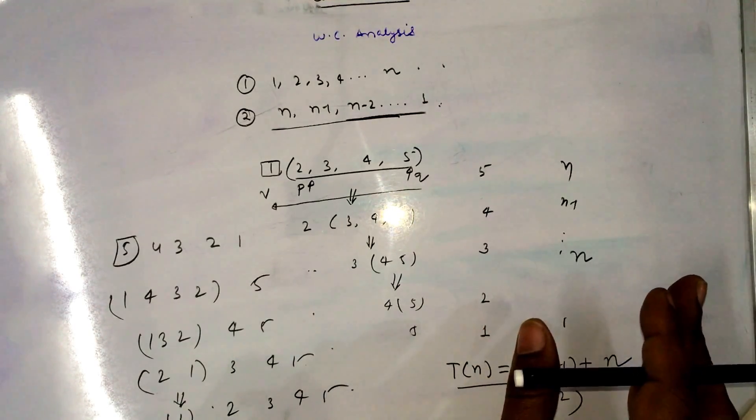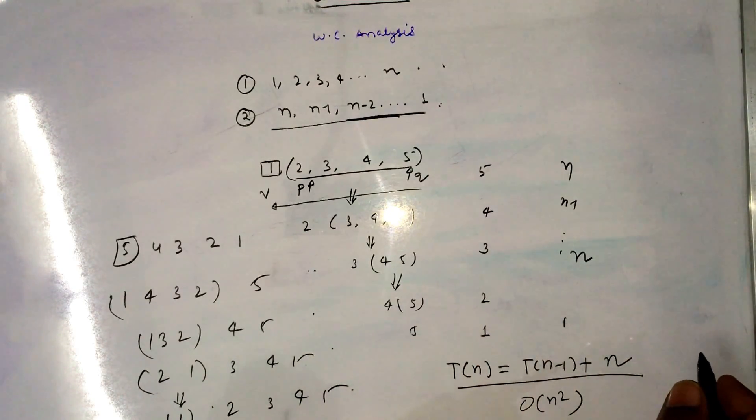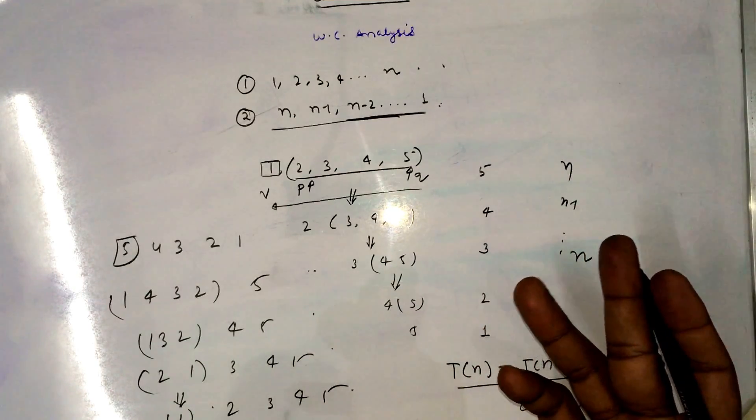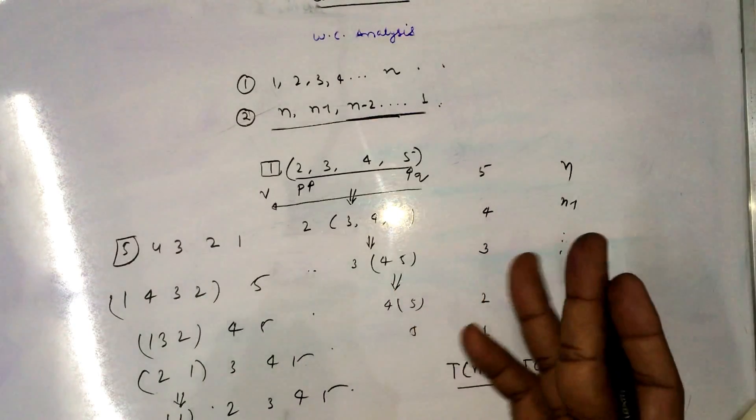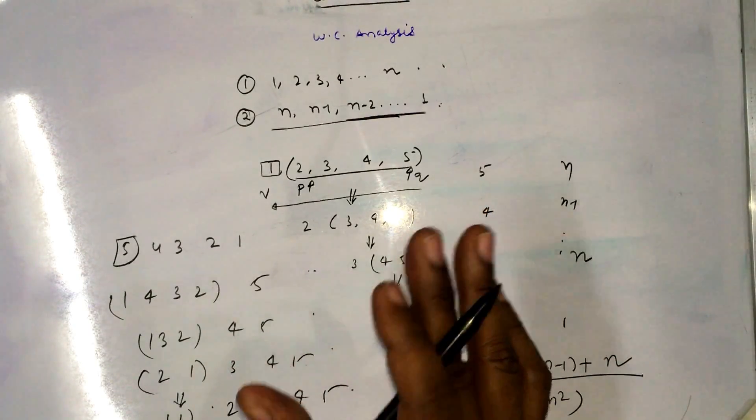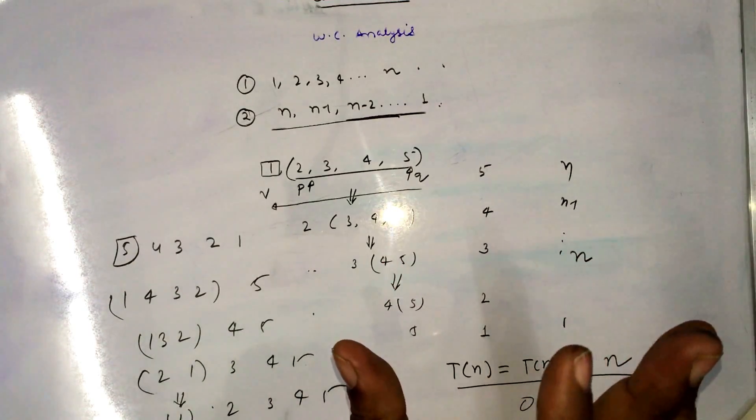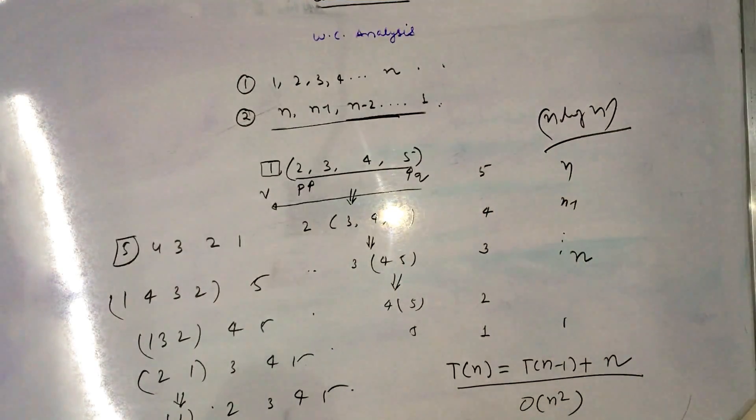In worst case, when the input given to the quicksort is sorted either in ascending or descending order, it will require order of n square time. And if the input is not sorted, then it is considered that it would be a best case where the partition position somewhat divides the array in halves. It is not exactly the same case, but in best case it will return n log n time when the array is not sorted. So this is all about the quicksort algorithm. Thank you very much.